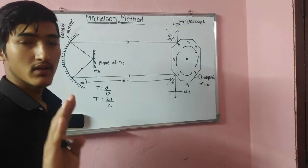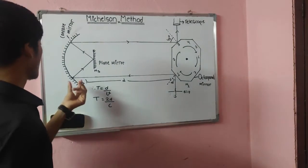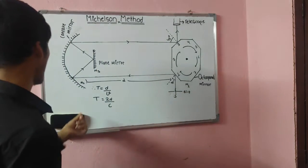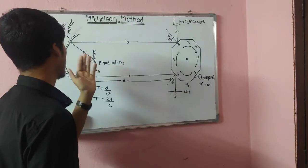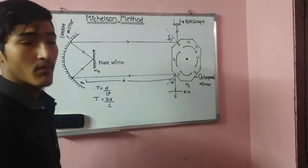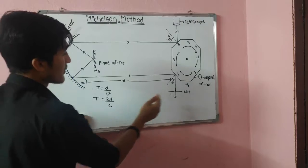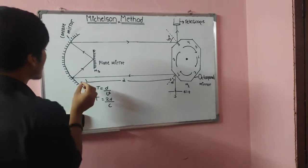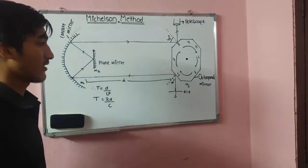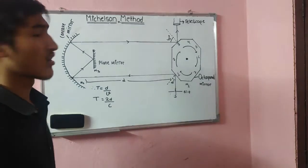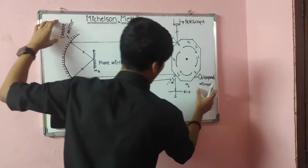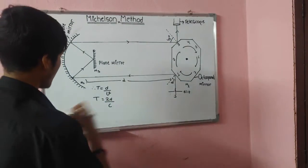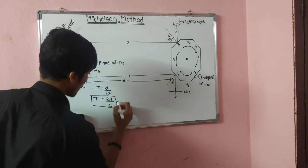You may wonder why we only use distance 2D. Although light travels from M1 to M2, then M2 to M3, and back from M3 to M2, the distance between the plane mirror and the concave mirror is much smaller compared to the distance between the concave mirror and the octagonal mirror. So the total distance is written as 2D only.